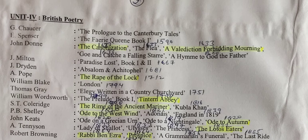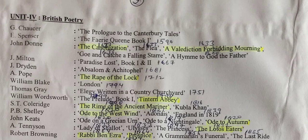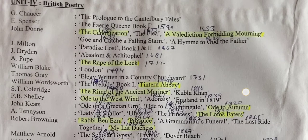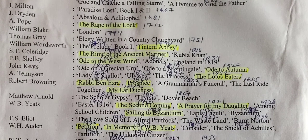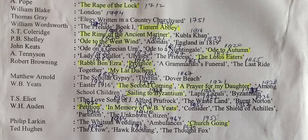Alexander Pope — The Rape of the Lock. William Blake — London. Thomas Gray — Elegy Written in a Country Churchyard. William Wordsworth — The Prelude, Book First, and Tintern Abbey. S.T. Coleridge — The Rime of the Ancient Mariner and Kubla Khan. P.B. Shelley — Ode to the West Wind, Adonais, England in 1819. John Keats — Ode on a Grecian Urn, Ode to a Nightingale, and Ode to Autumn. Alfred Lord Tennyson — The Lady of Shalott, Ulysses, The Princess, The Lotus Eaters. Robert Browning — Rabbi Ben Ezra, Prospice, A Grammarian's Funeral, The Last Ride Together, My Last Duchess.